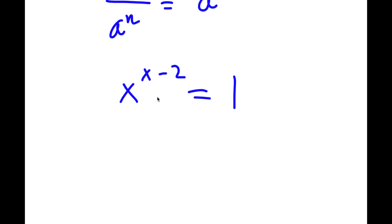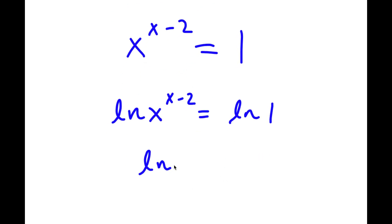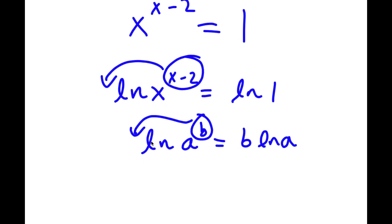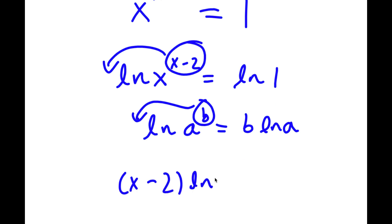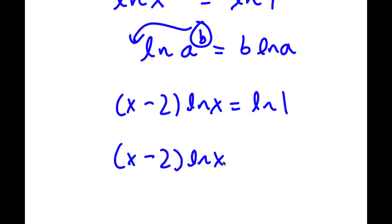If I take the natural log on both sides, I get ln of x to the power of x minus 2 is equal to ln 1. Now, if I have something in the form ln of a to the power of b, I can move the exponent to the front, so that equals b times ln a. So ln of x to the power of x minus 2 becomes x minus 2 times ln x, which equals ln 1. And ln 1 is simply equal to 0. So now I have x minus 2 times ln x is equal to 0.